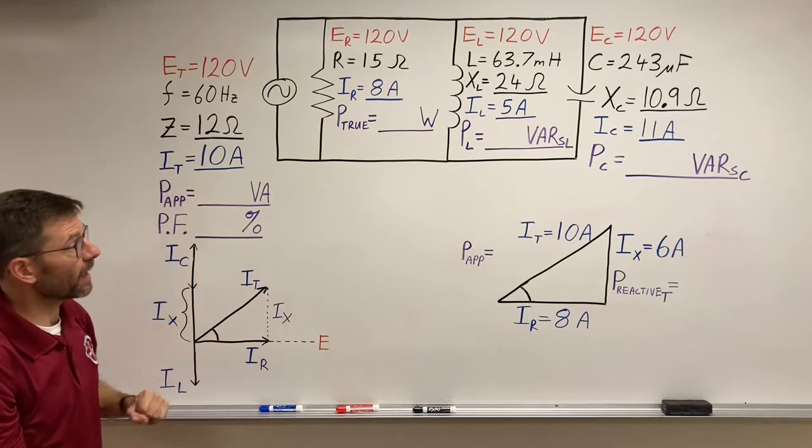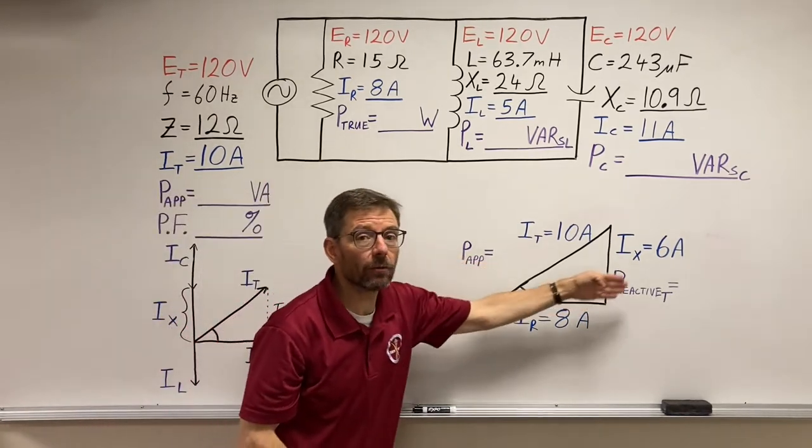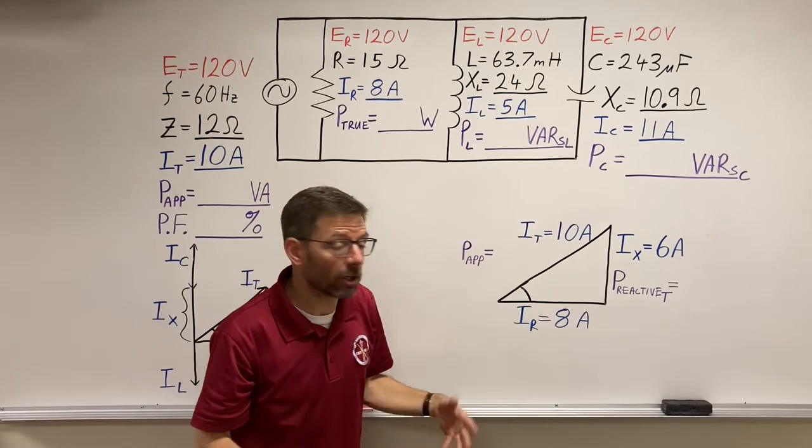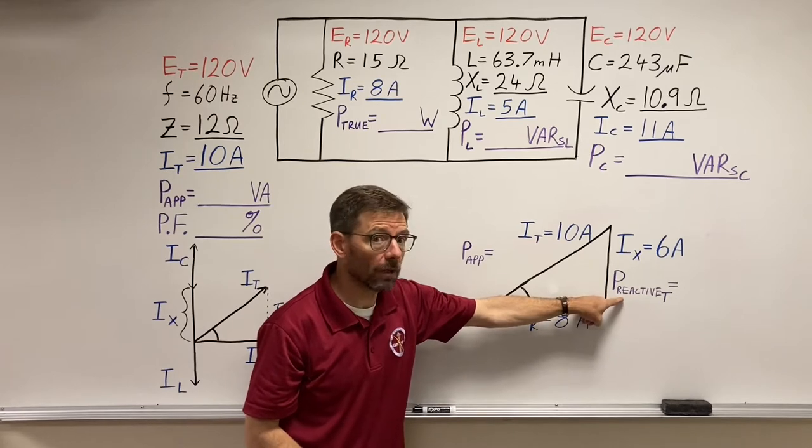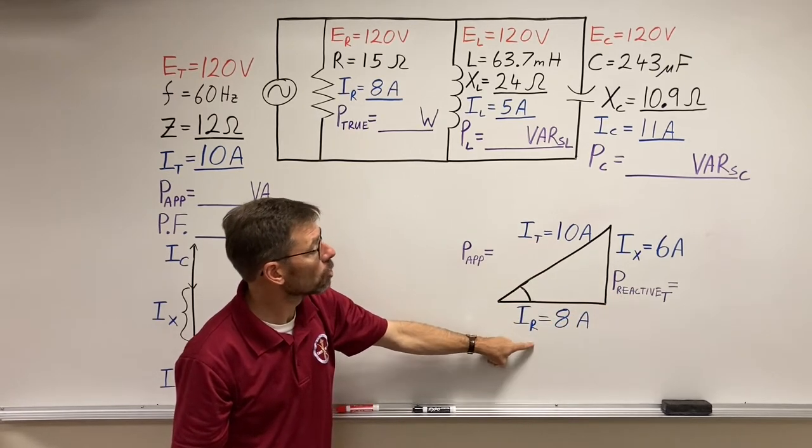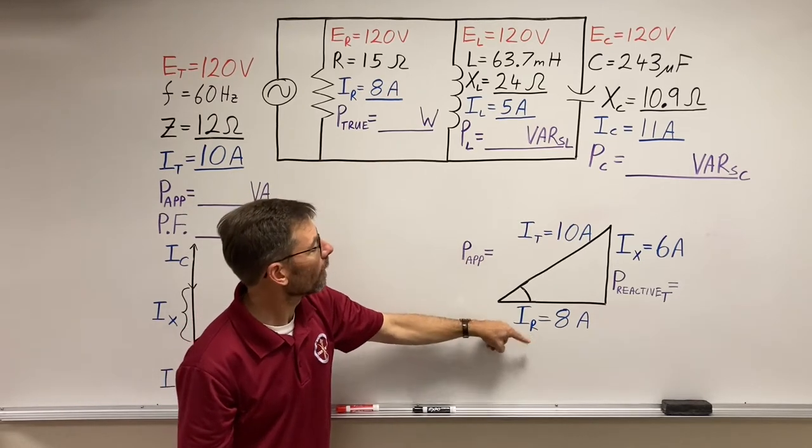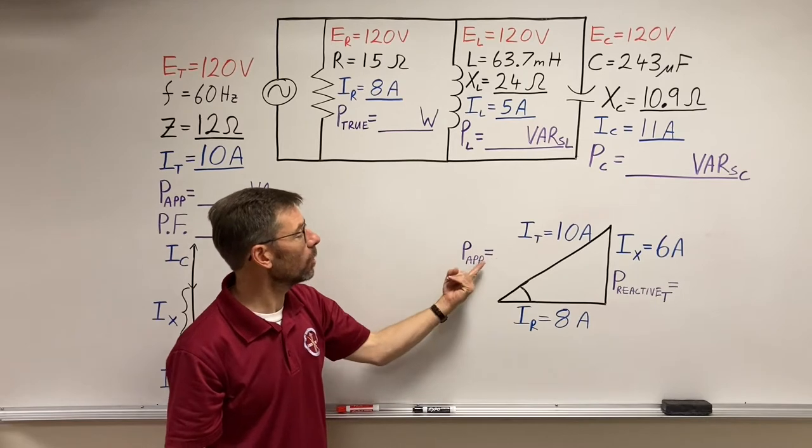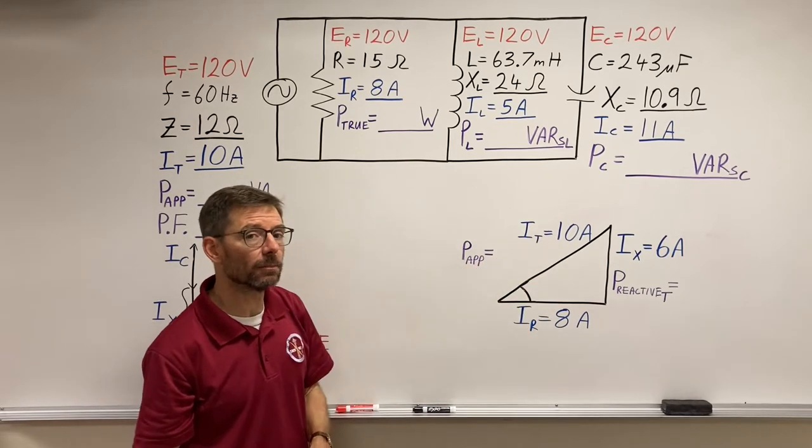So let's fill in these values, and then I'm going to use the Pythagorean theorem to double check our math. Because my net reactive power squared plus my true power squared should equal apparent power squared, so we'll take the square root of that and get this number.